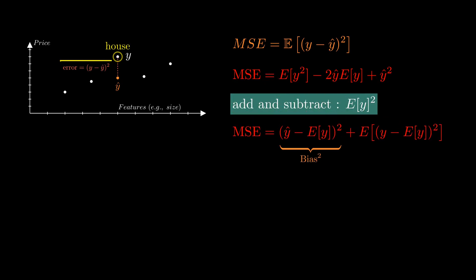The first term is the squared bias, the square of the difference between our model's prediction and the expected value of Y. In physics, it measures systematic error. How far off we are, on average, because of wrong assumptions in our model.